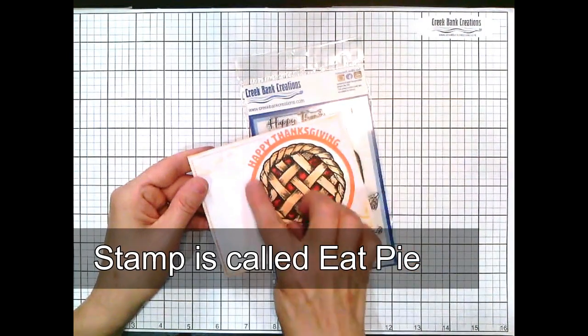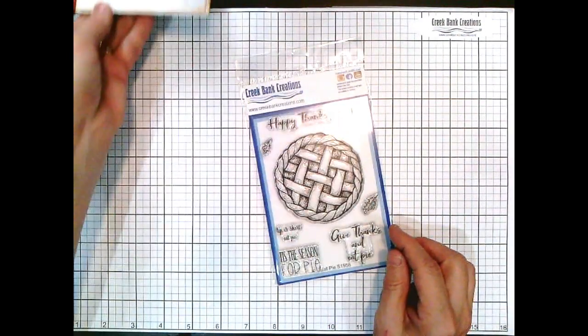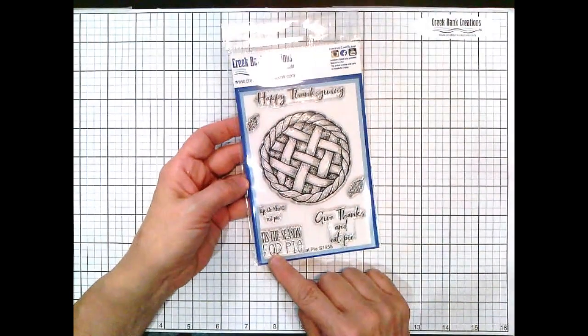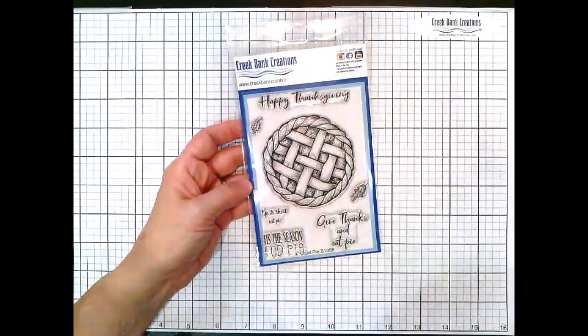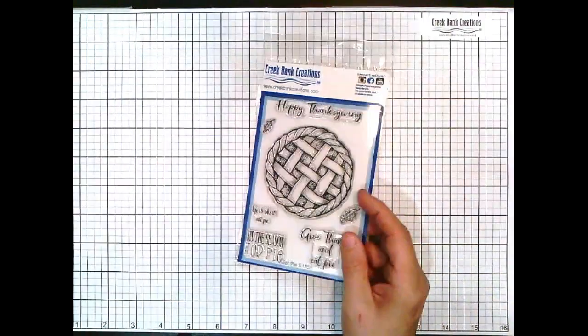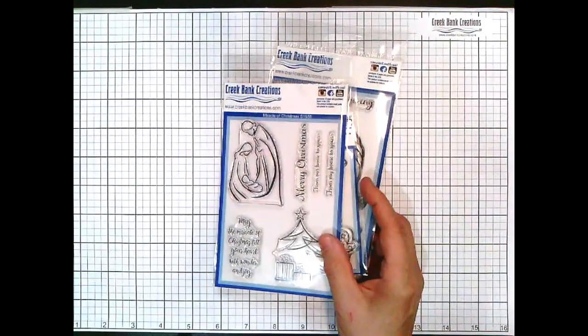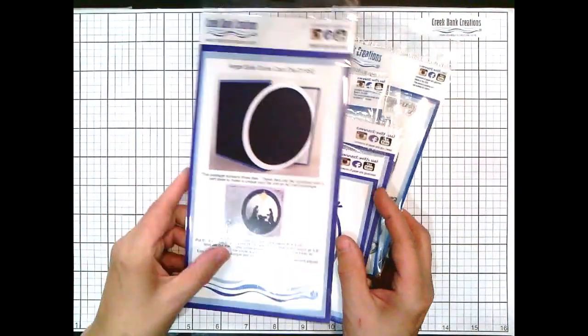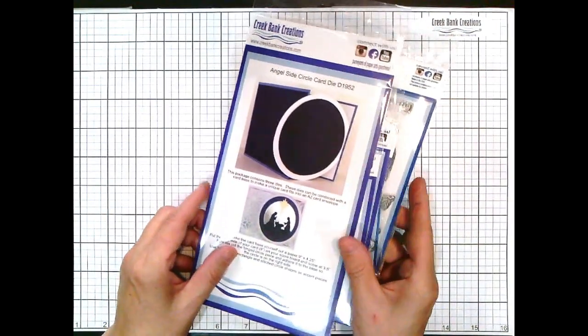This has been very well received. Customers are very happy with it. Here's a sample where we've done the pie, and the pie fits right inside the bezel of the Happy Thanksgiving die. It says 'give thanks and eat pies,' 'it's the season for pie,' 'life is short, eat pie.' So lots of fun.